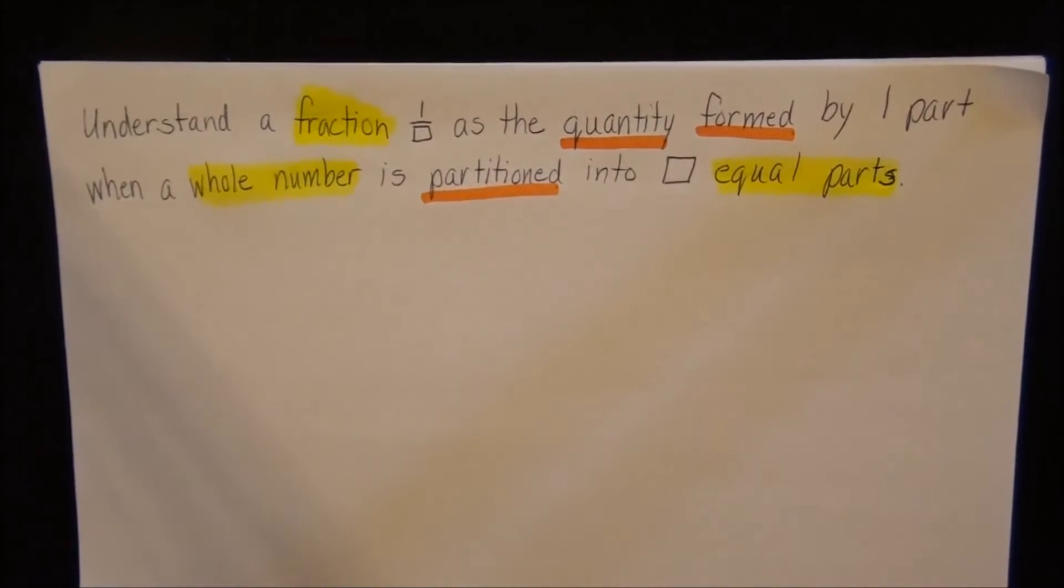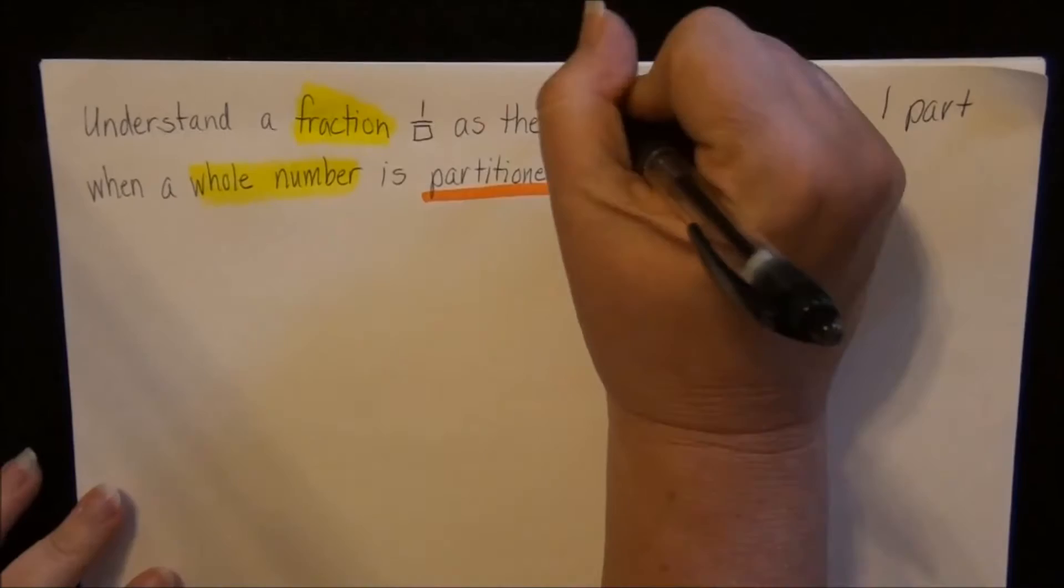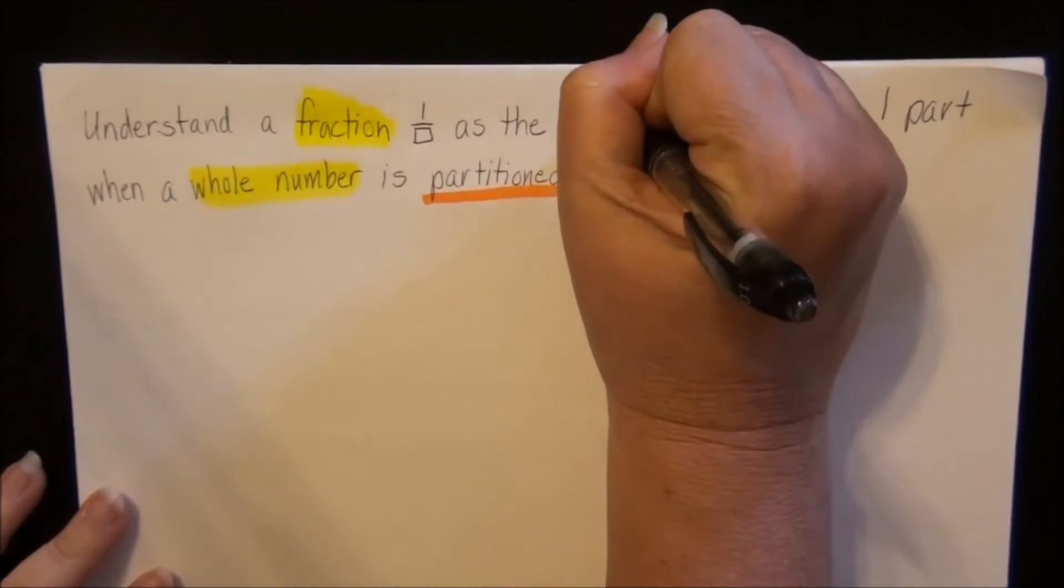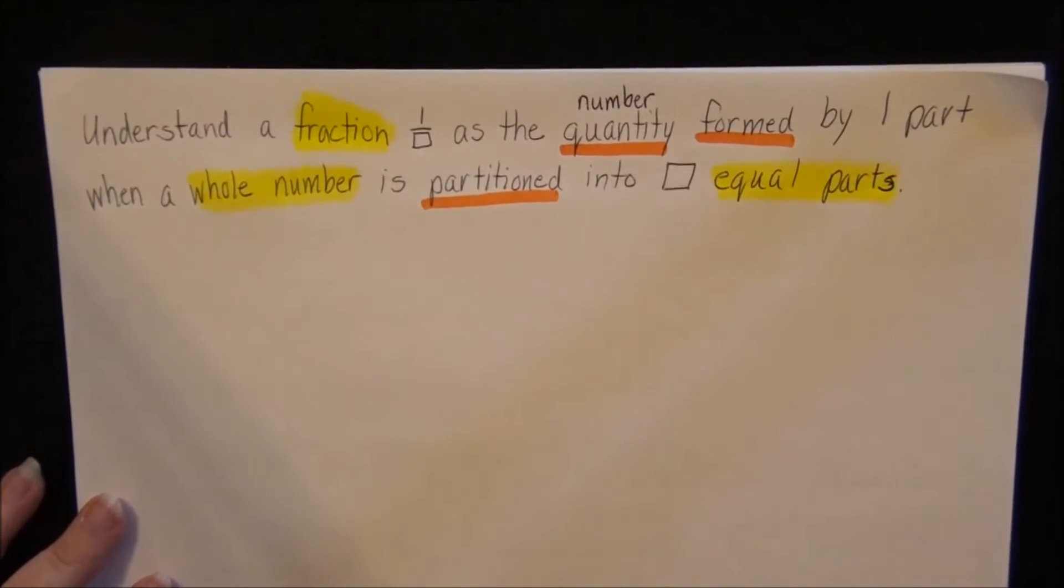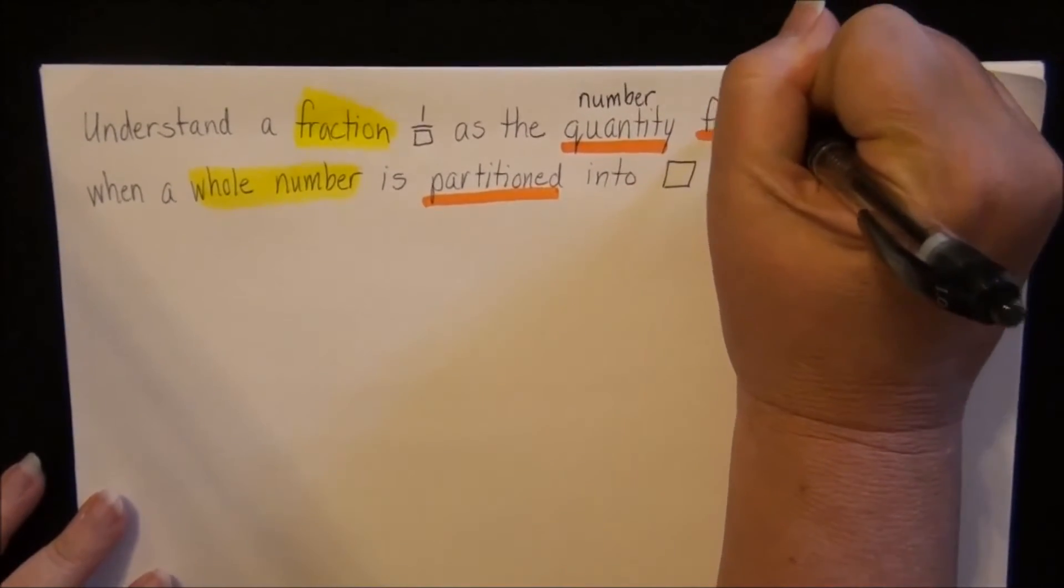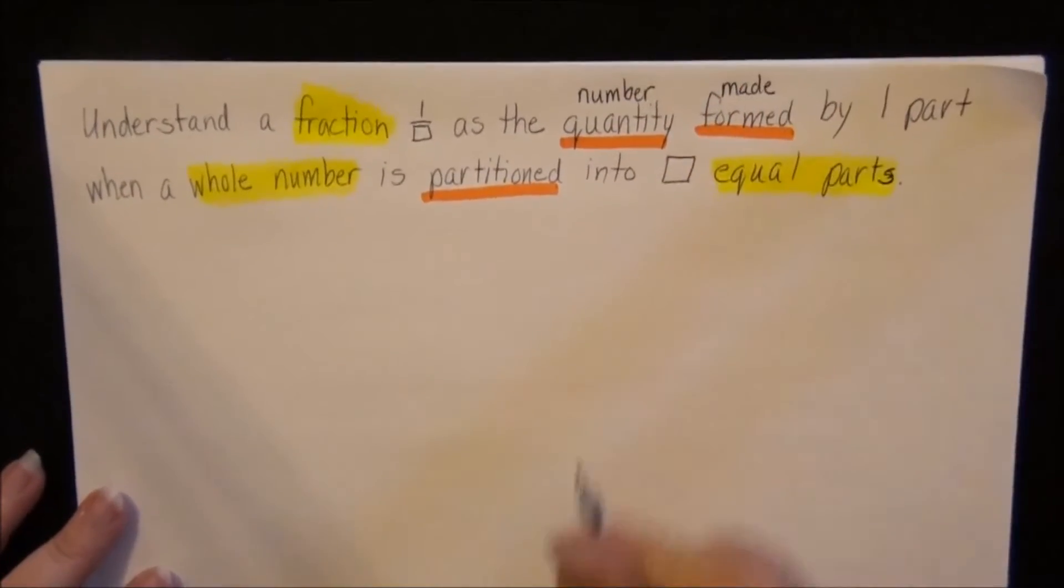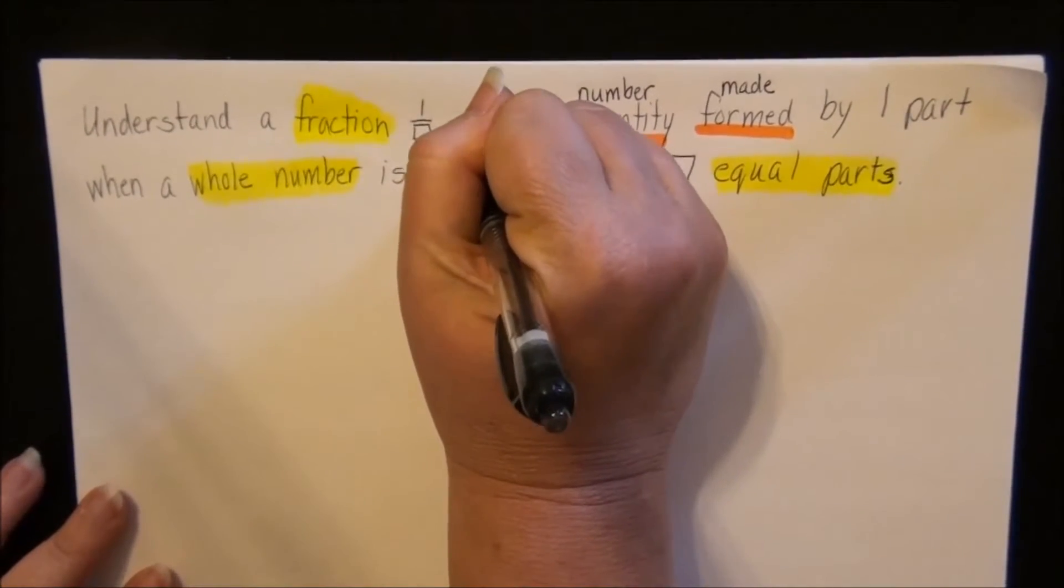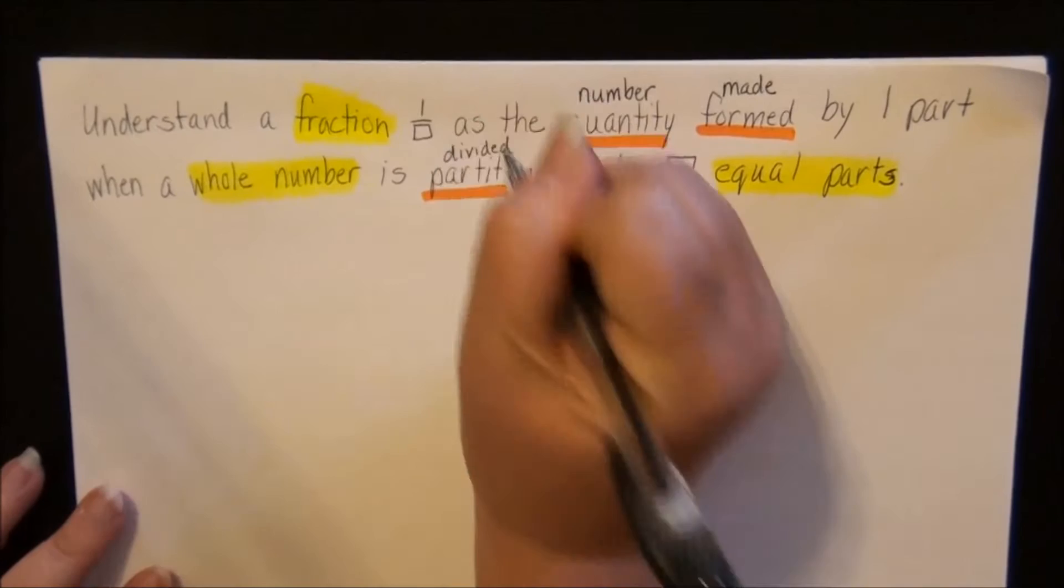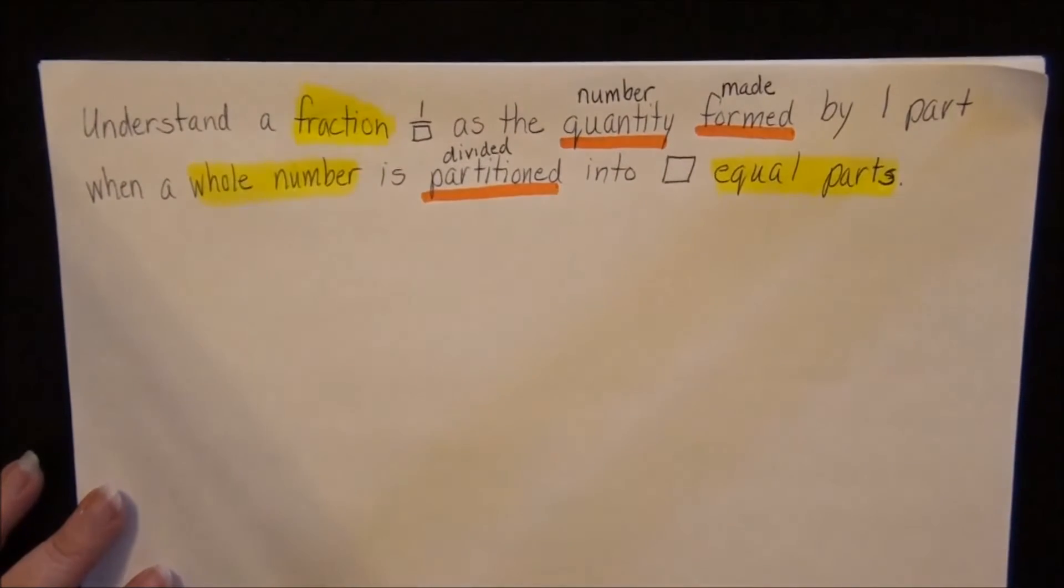Okay, now quantity is basically just a number. Formed just means made. And partitioned means divided. And you'll see how that works as we go through the lesson.